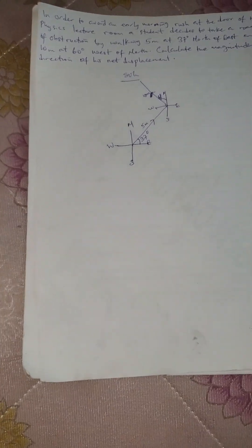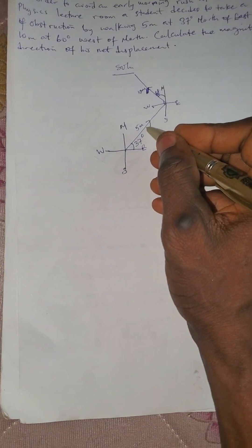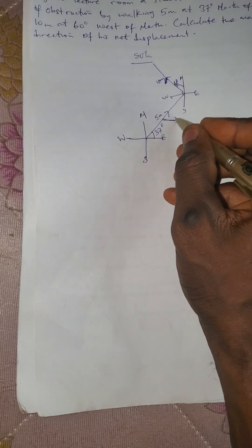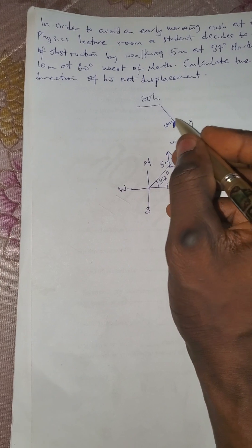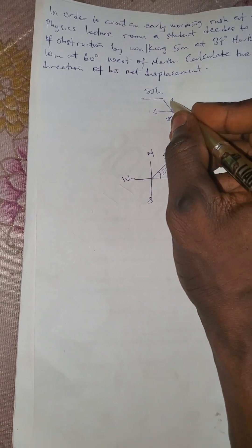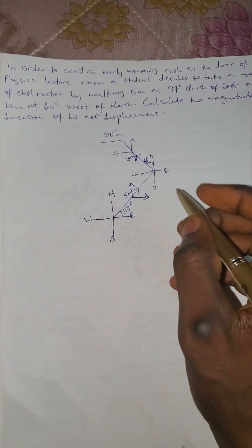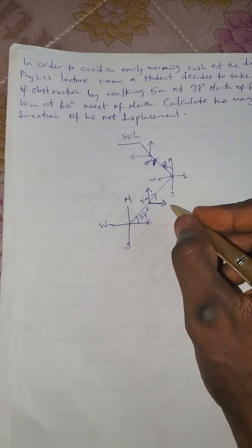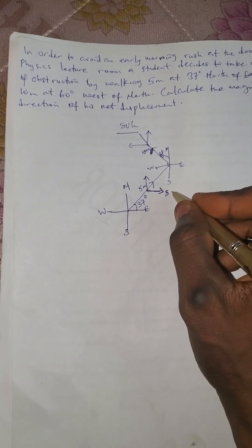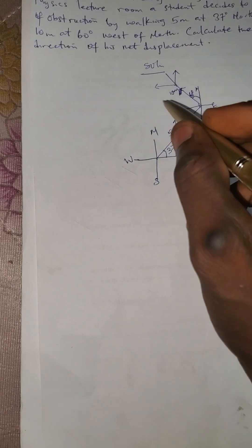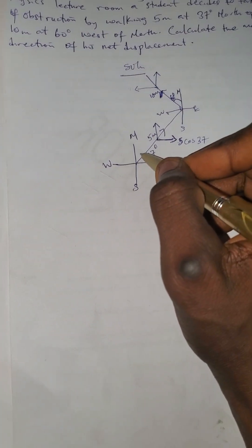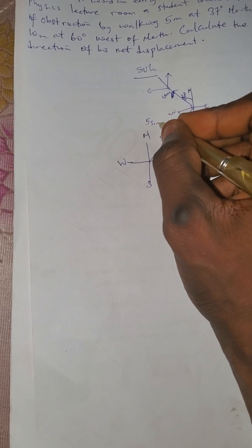The question asks us to calculate the magnitude and direction. We have to resolve each vector. The first one going this way — we resolve it into vertical and horizontal components. Where we have theta, that side will be cosine: 5 cos 37. Where we don't have theta, that side will be 5 sine 37.